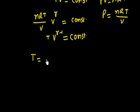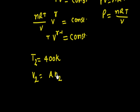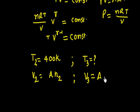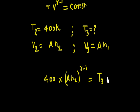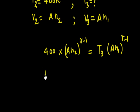Right now the temperature is T2 = 400 Kelvin and volume is V2 = A × H2 where H2 = (4/3)H1. We need to find T3, the final temperature, when volume becomes V3 = A × H1 (original volume). Applying TVγ⁻¹ = constant: 400 × (A×H2)^(γ-1) = T3 × (A×H1)^(γ-1). The A cancels, giving 400 × H2^(γ-1) = T3 × H1^(γ-1).